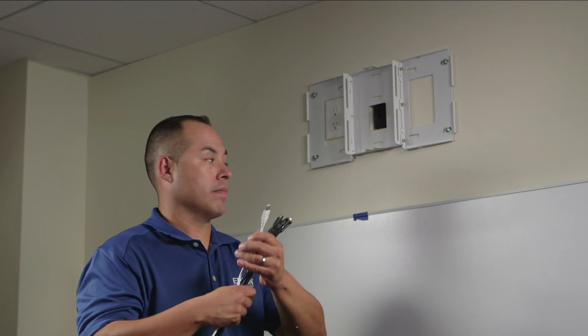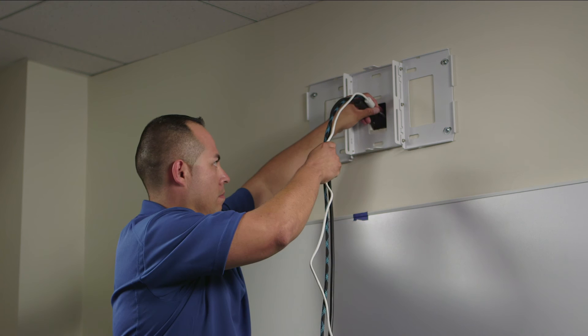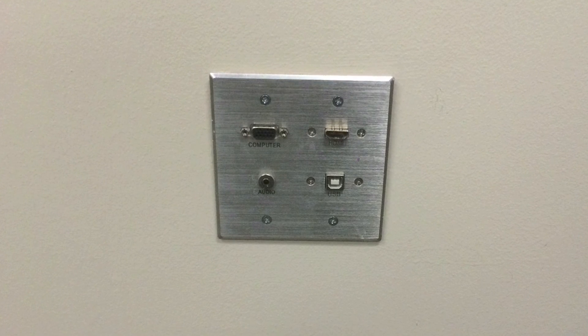First we will run the HDMI, VGA, and USB cables inside the wall. You can terminate them using a wall plate near where the user will place their computer.